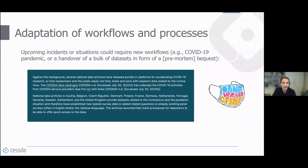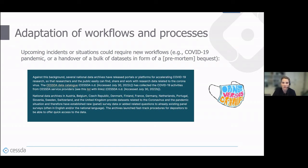Sometimes it's necessary to adapt workflows and processes — for example, during a pandemic you might need fast-track procedures to ingest data with a different workflow than usual. Or if you get a bulk of datasets in the form of a pre-mortem request, you might put that on a lower priority line since it's not urgent.